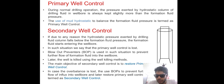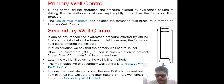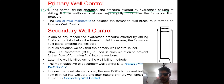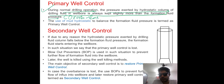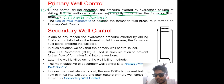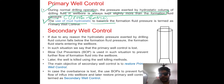We have three types of well control: primary, secondary, and tertiary. During normal drilling operations, the pressure exerted by the hydrostatic column of drilling fluid in the wellbore is always kept slightly more than the formation fluid pressure - maintaining overbalance. The mud hydrostatic itself acts as my primary well control agent. The use of mud hydrostatic to balance the formation fluid pressure is termed as primary well control.